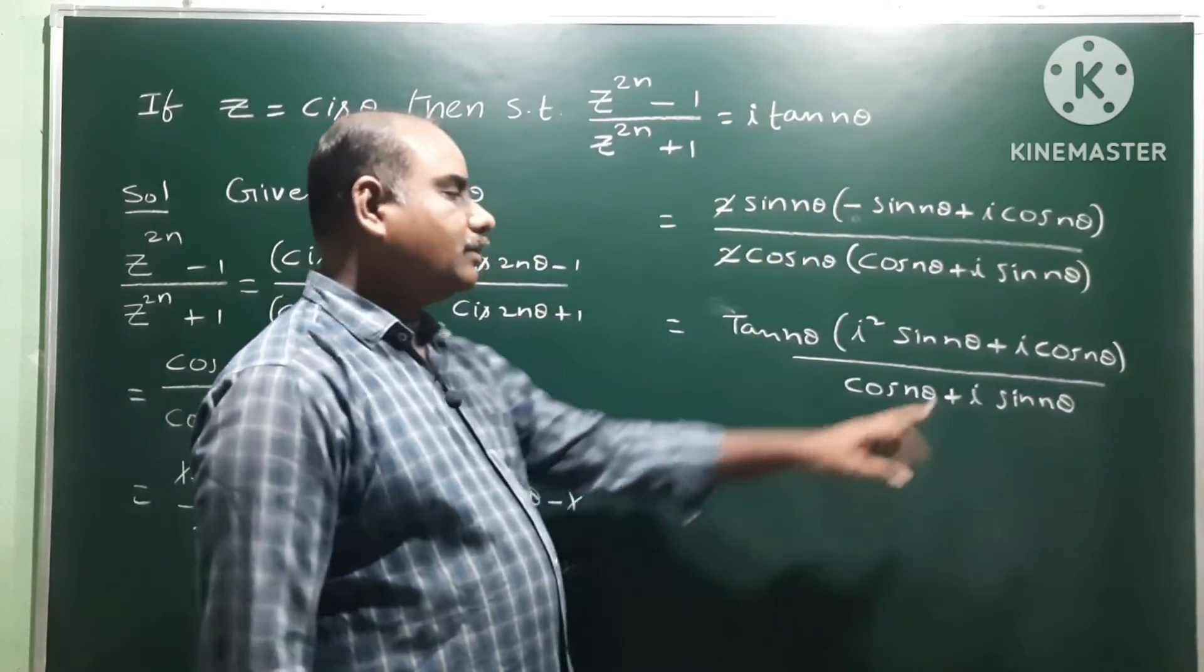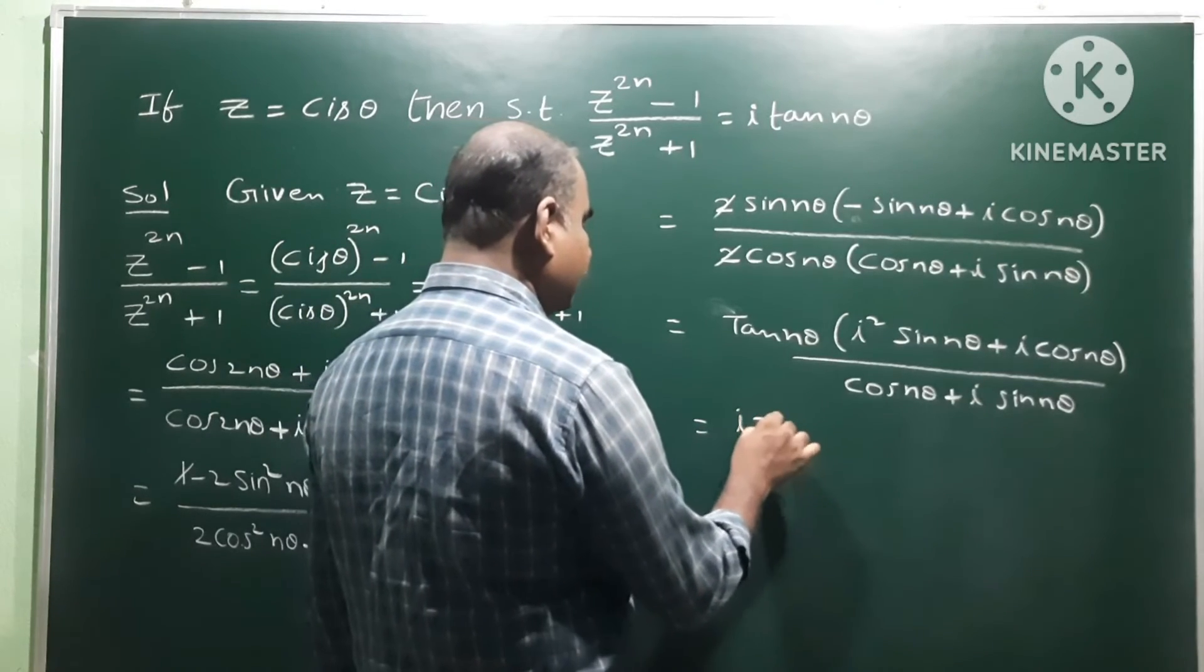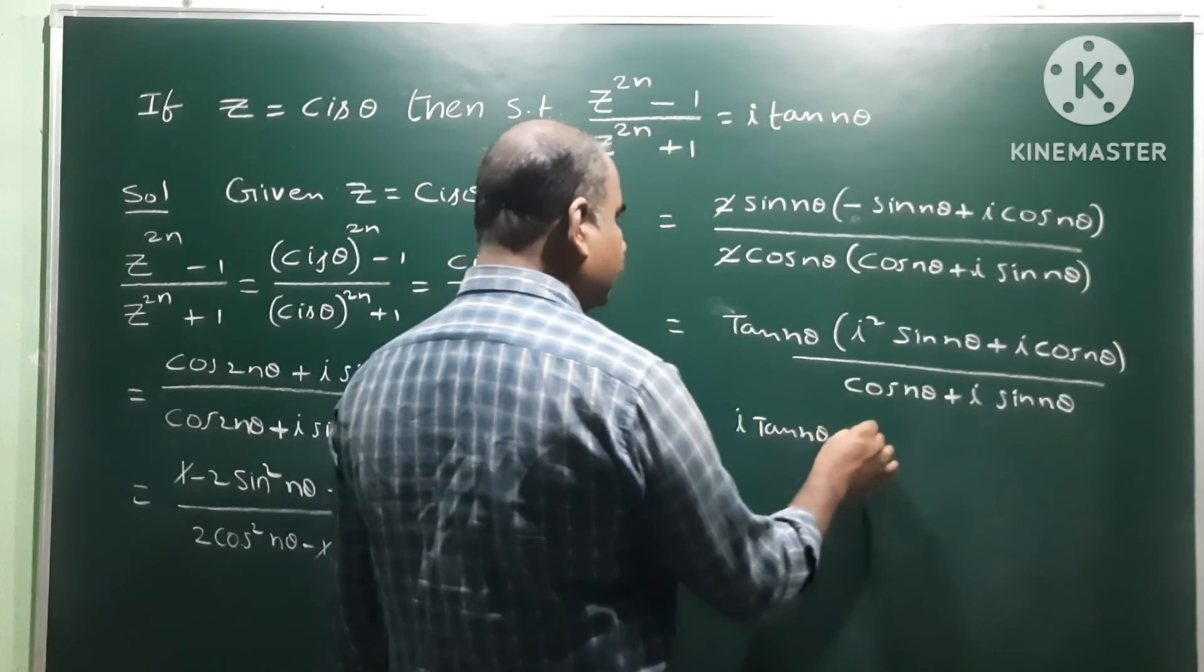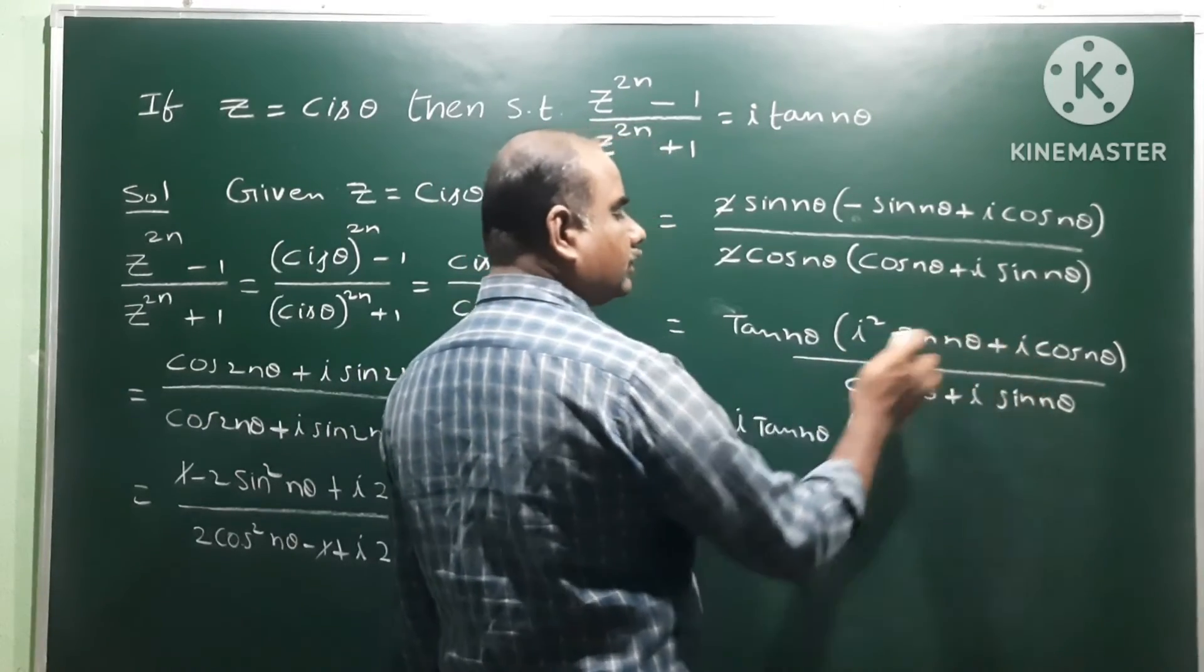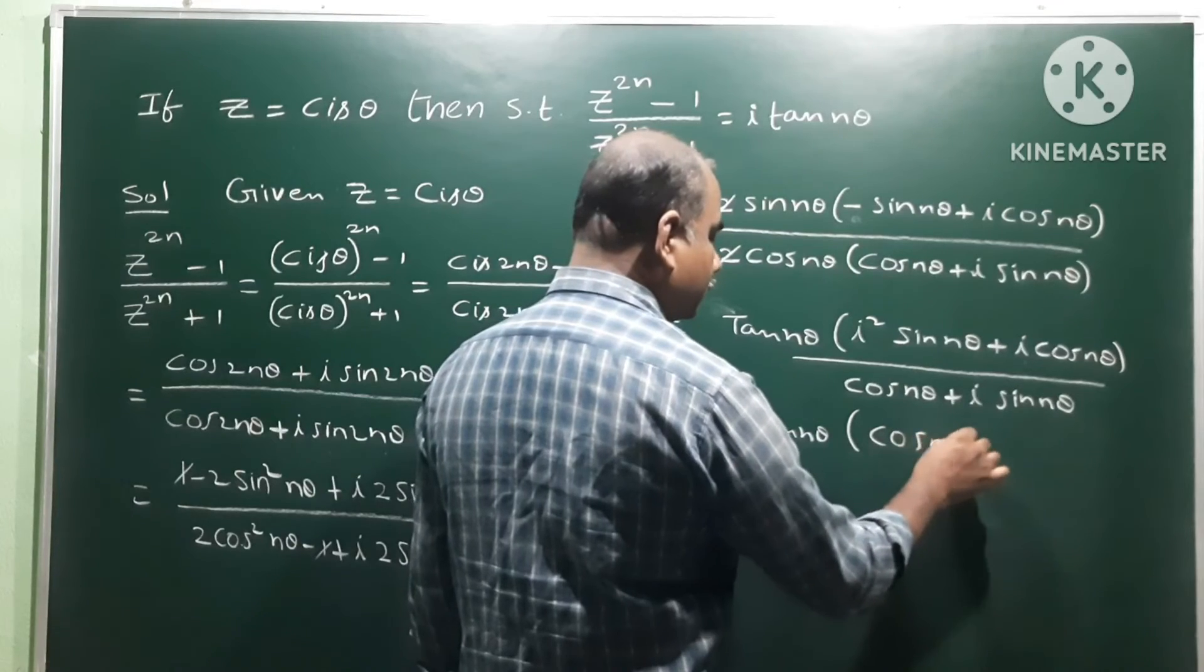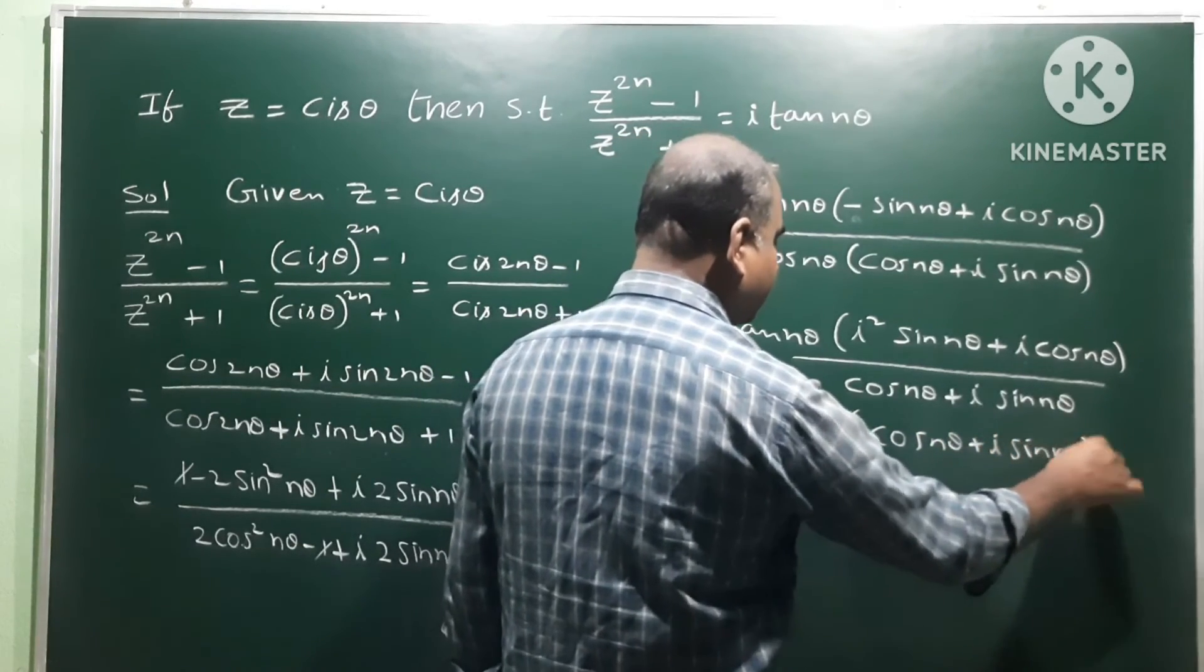times cos nθ plus i sin nθ by denominator, also the same: cos nθ